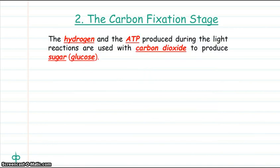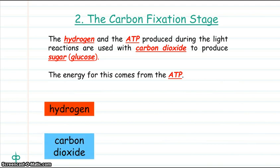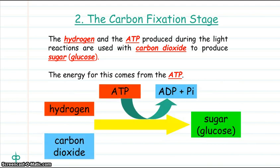In this carbon fixation stage, the hydrogen and the ATP produced during the light reactions are used with carbon dioxide to produce sugar or glucose. This energy comes from ATP. So hydrogen and carbon dioxide are bound together to create sugar using the energy from ATP.